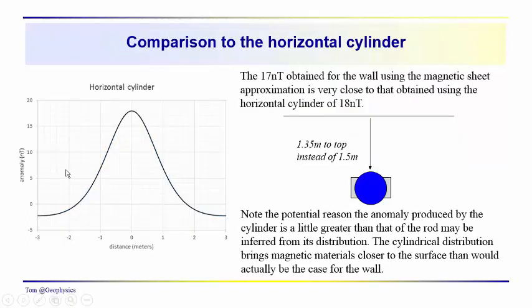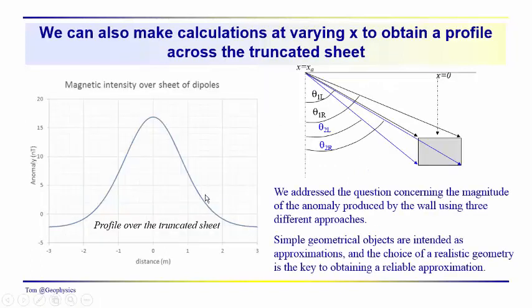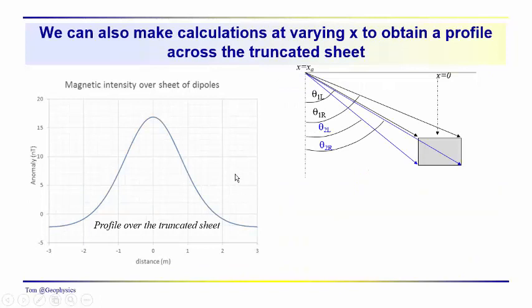Okay, so if we look back here, we have for the sphere an anomaly of about 5.4 nanoteslas, 18 for the horizontal cylinder. We were computing those anomalies as a function of x and here you just had to compute the maximum value. Now we can also do the same thing with the magnetic field intensity over the sheet of dipoles.